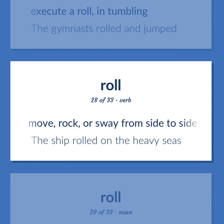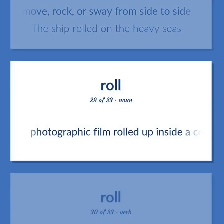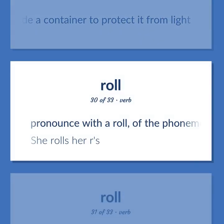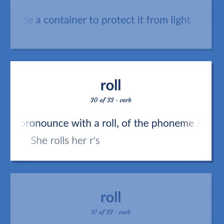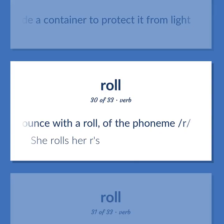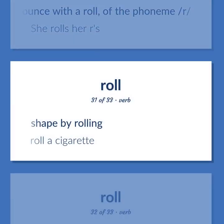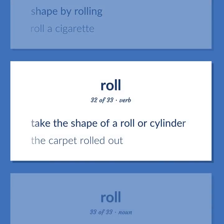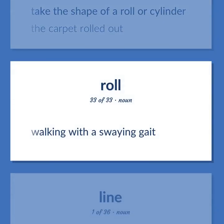ROLL (continued): Move, rock, or sway from side to side — 'the ship rolled on the heavy seas.' Photographic film rolled up inside a container to protect it from light. Pronounce with a roll of the phoneme R — 'she rolls her Rs.' Shape by rolling — 'roll a cigarette.' Take the shape of a roll or cylinder — 'the carpet rolled out.' Walking with a swaying gait.